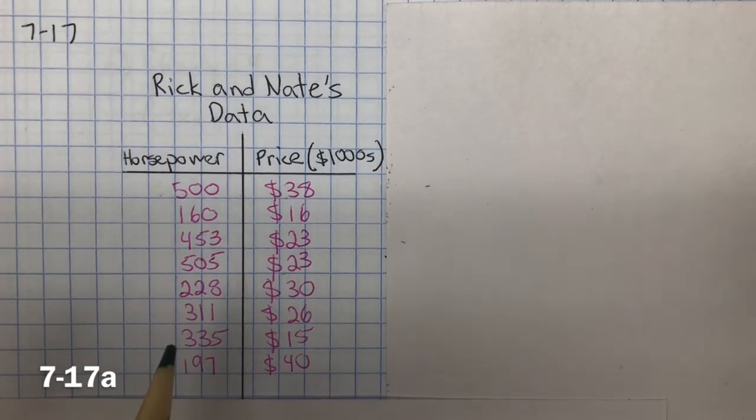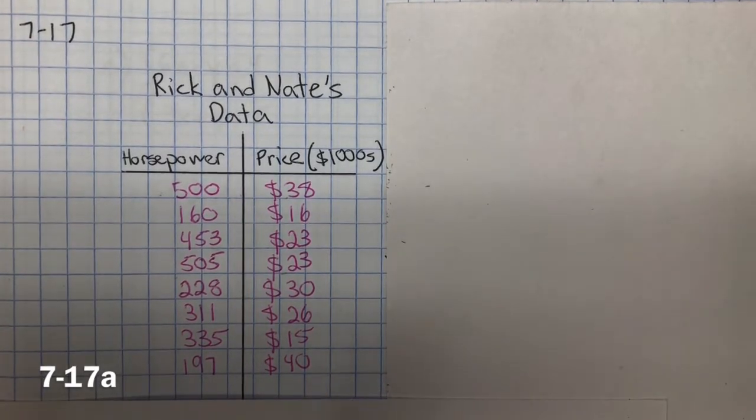What I'm going to do now is set it up as a graph and plot the points to see if I could see a trend line, if there's a positive association or negative association or no association.